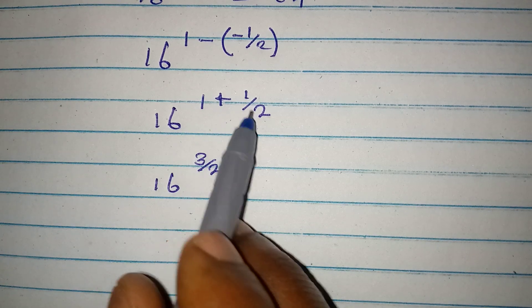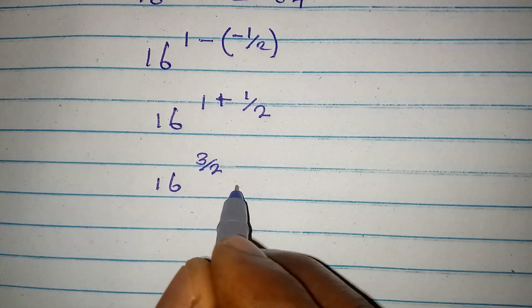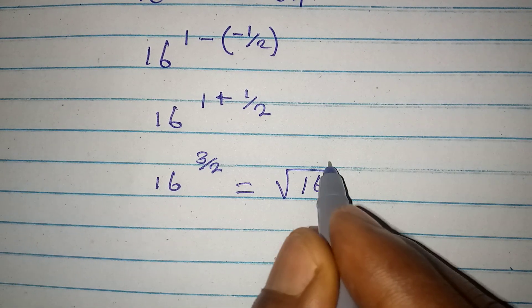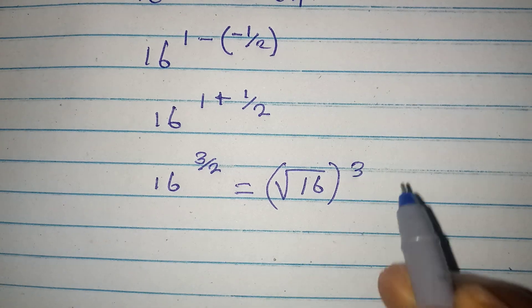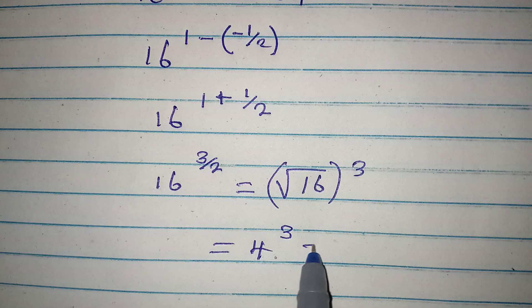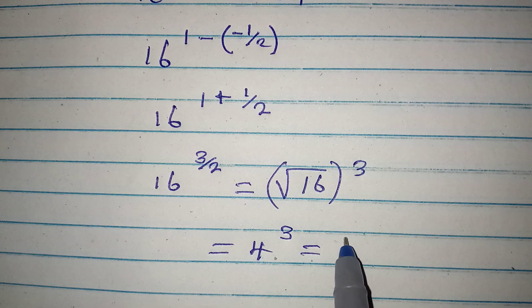Because if you add 1 plus half, you are going to have 3 over 2. Now this means that we are looking for the square root of 16. Then whatever we have, we raise it to the power of 3. This is going to give 4 to the power of 3, and 4 to the power of 3 is 64.